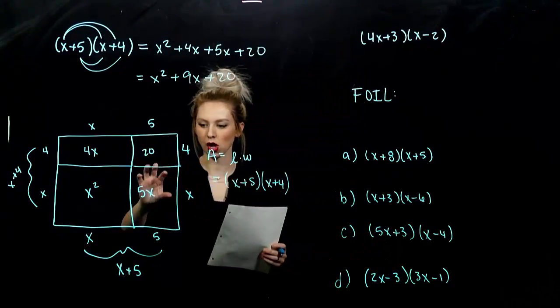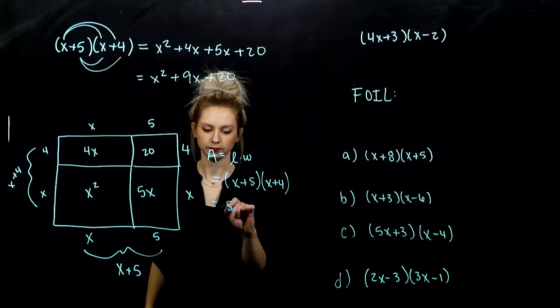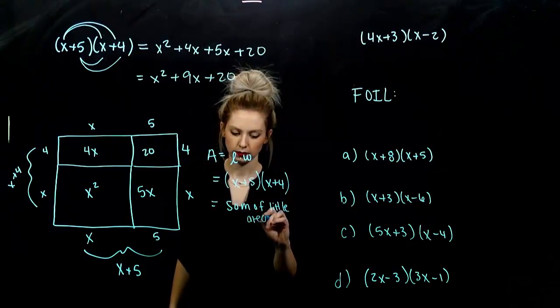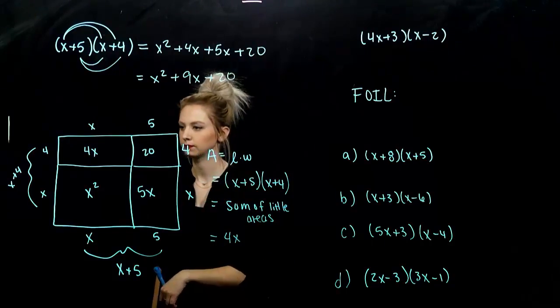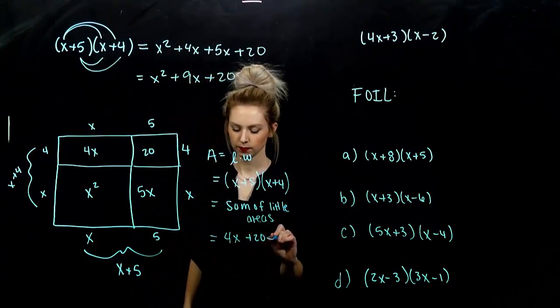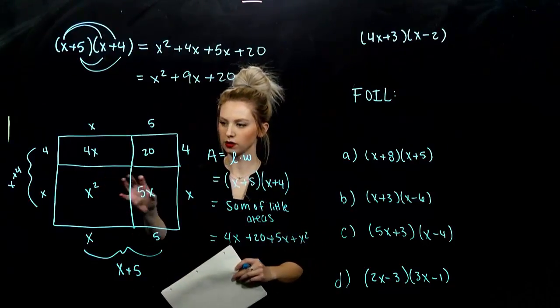And, how do we get there? It's the sum of all of these little areas. Sum of the little areas. What am I looking at? I've got 4 times x, 20, 5x and x squared all together, adding up all of these areas.